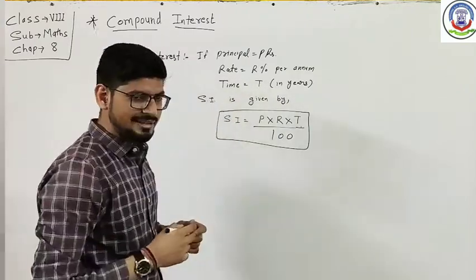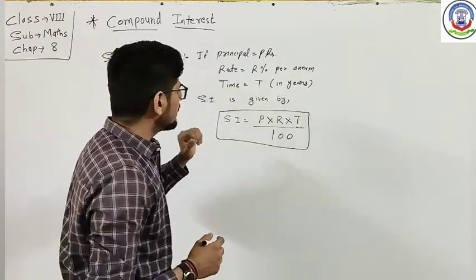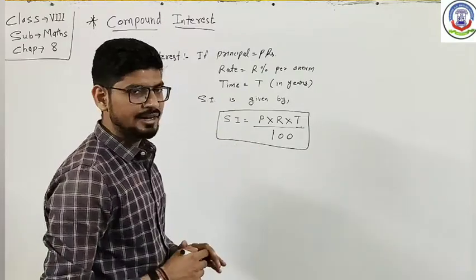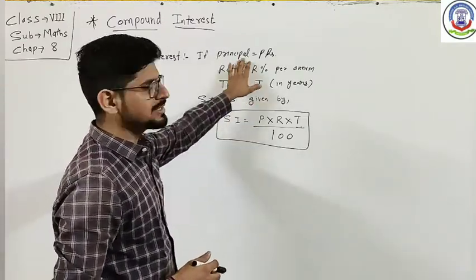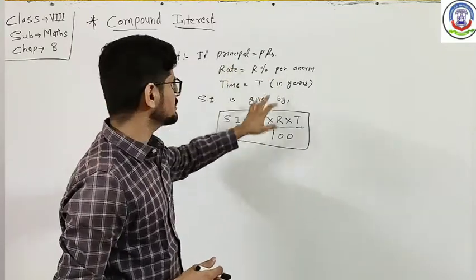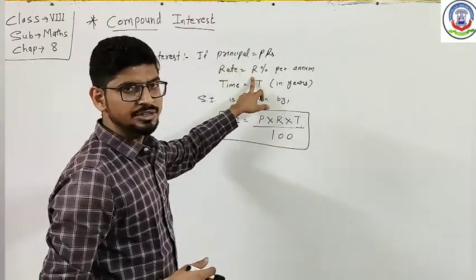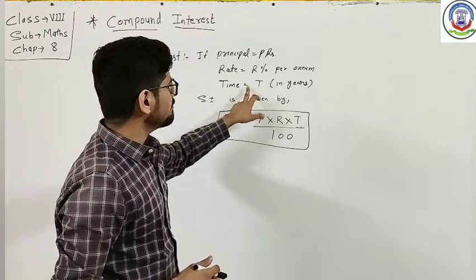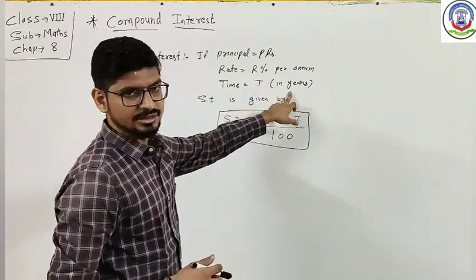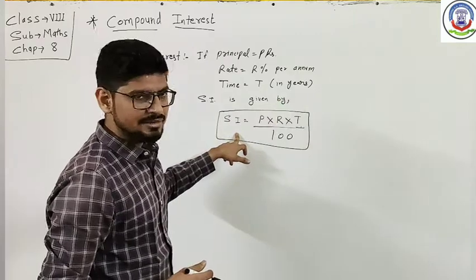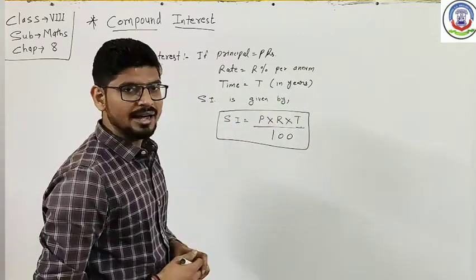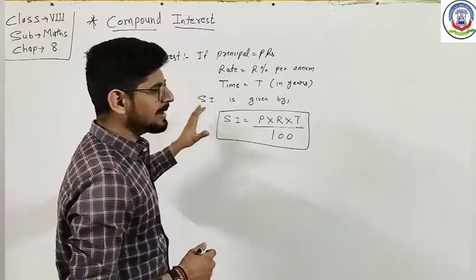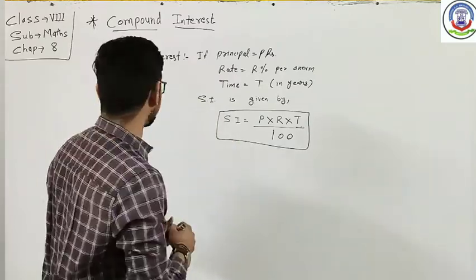Simple Interest हमें इस formula से पता होगा: SI = PRT/100, where P is your principal amount which is in rupees, R is your rate of interest which is in percent per annum, and time period T which is in years. यह आपने Simple Interest में देखा था।